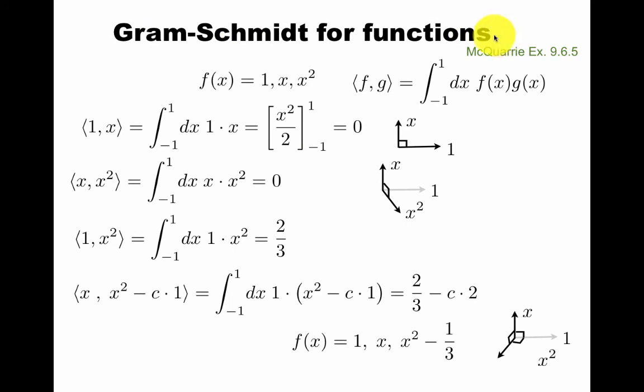Here's a simple example of Gram-Schmidt for functions that you might have seen before. You define the inner product like this, in this case, and you see that these three functions are not orthogonal. x is orthogonal to 1, abstractly meant as functions that are orthogonal with this inner product. But x squared is not orthogonal.